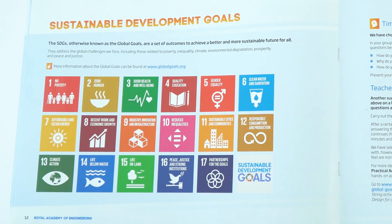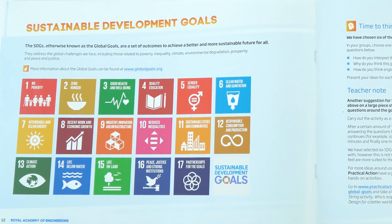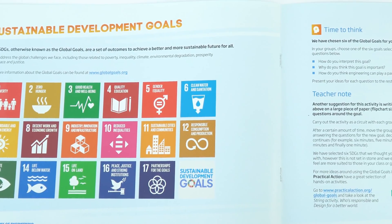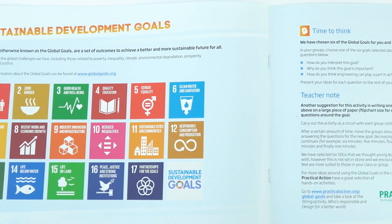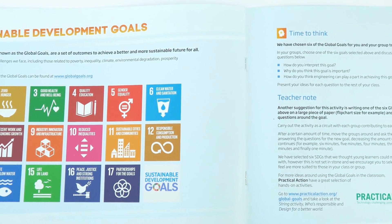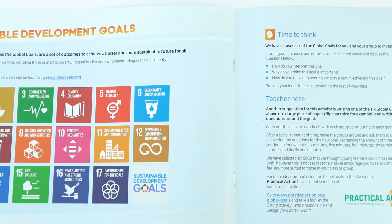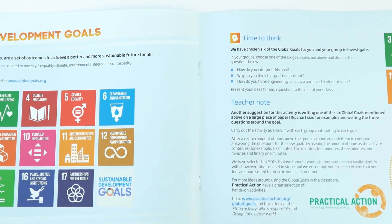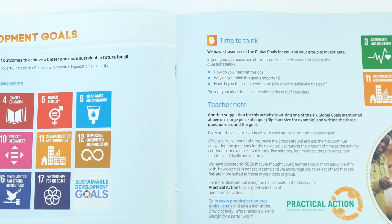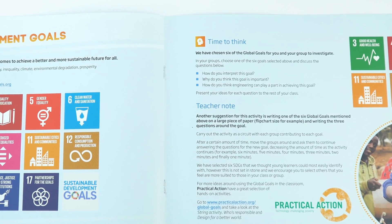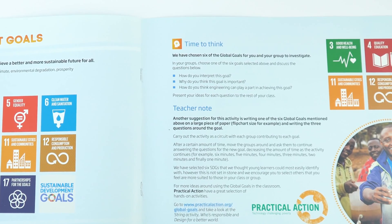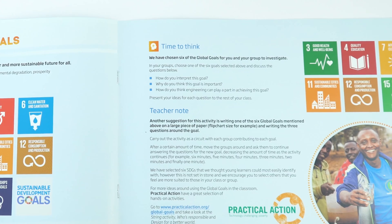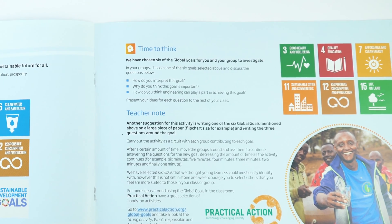We also include tasks related to the Sustainable Development Goals. The SDGs, otherwise known as the Global Goals, are a set of outcomes set by the UN to achieve a better and more sustainable future for all. We've chosen six goals to give students more focus, since looking at all 17 can be quite overwhelming, and we give them some simple research tasks to work on.